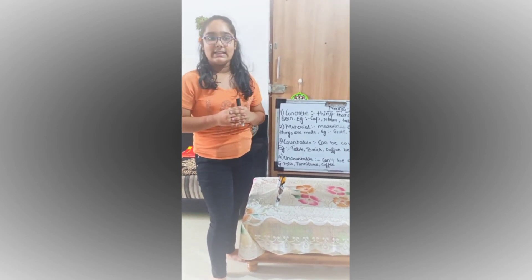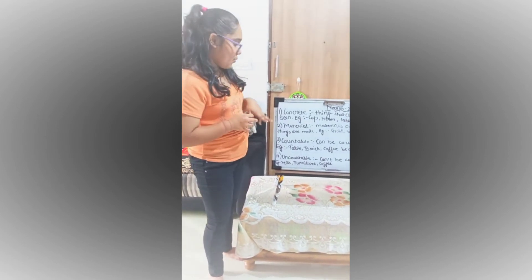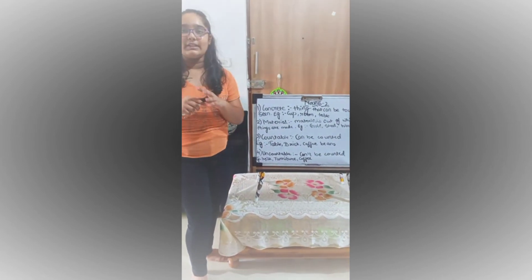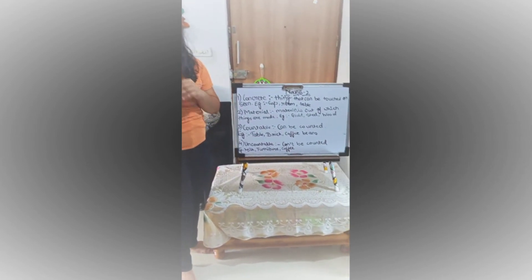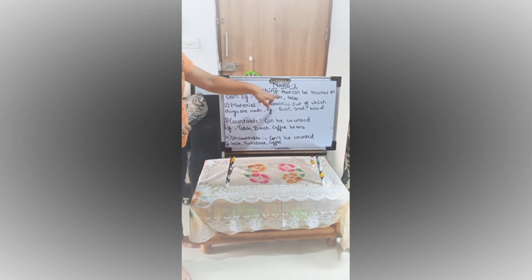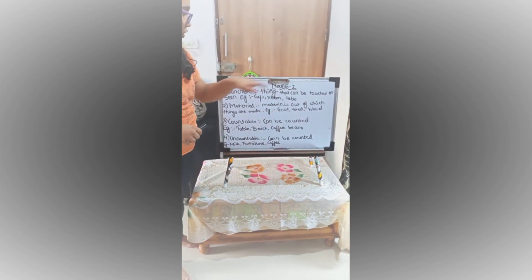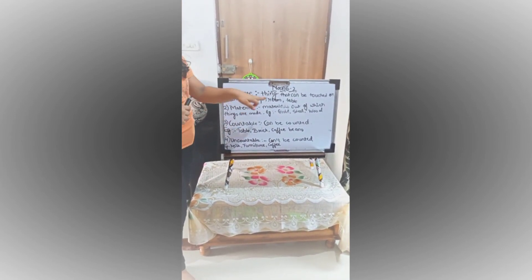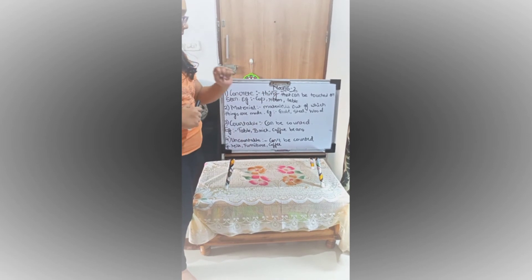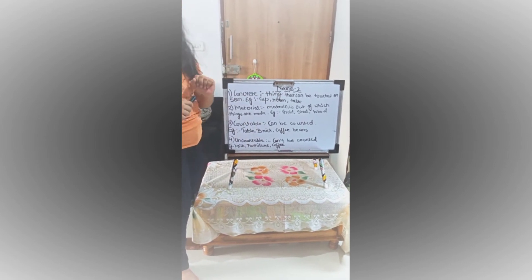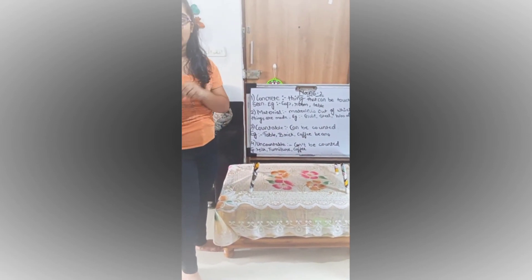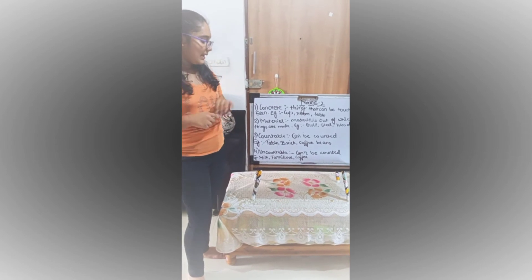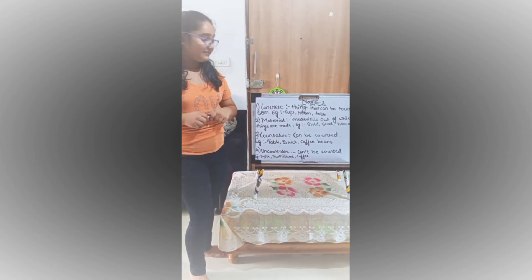Now let's study about what is a concrete noun. A concrete noun is the name of a noun which can be touched or seen. For example, cup, room, table — all of these things can be touched and seen, that's why they come under concrete nouns.